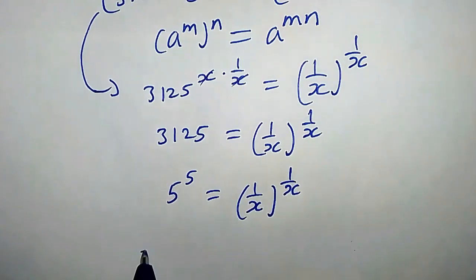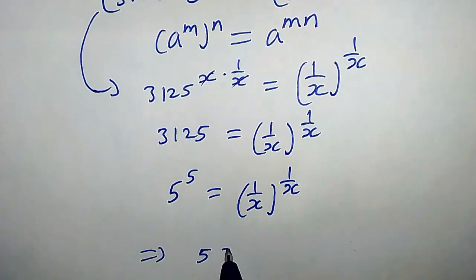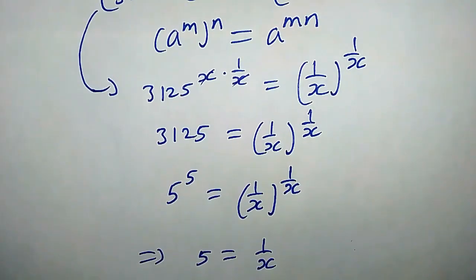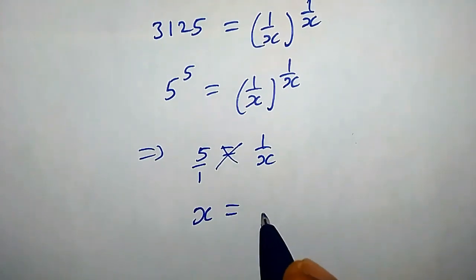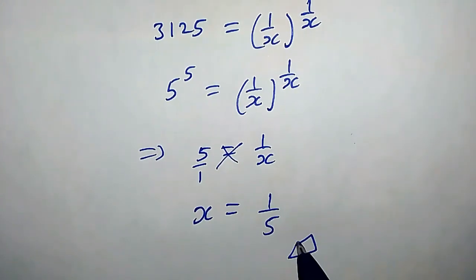We can put 1 here, so when we cross multiply, x equals 1 over 5, which is the required solution.